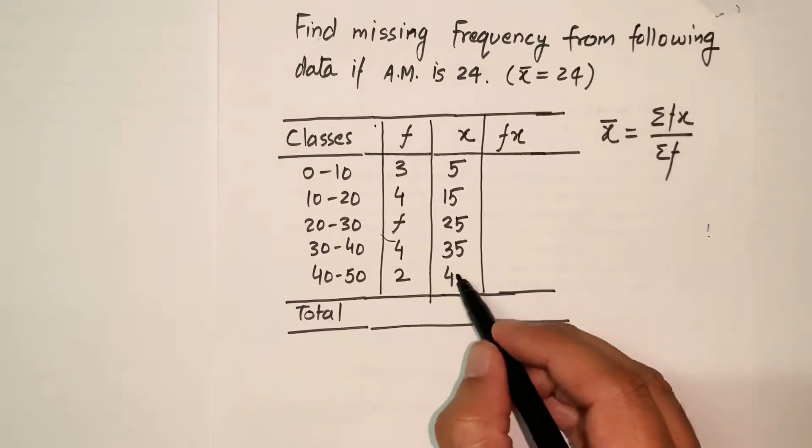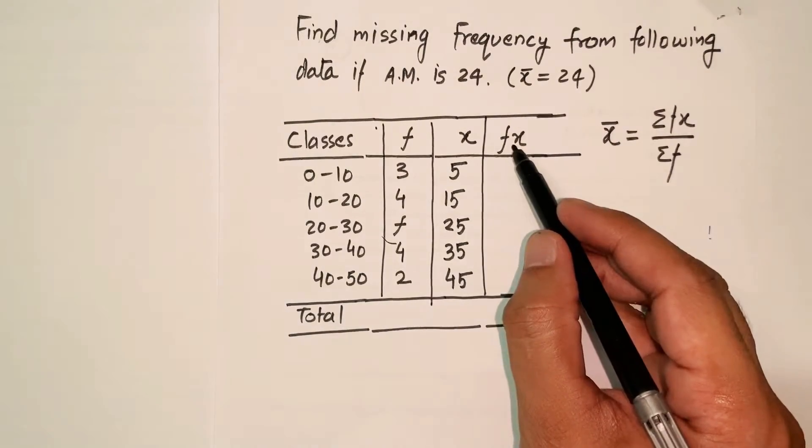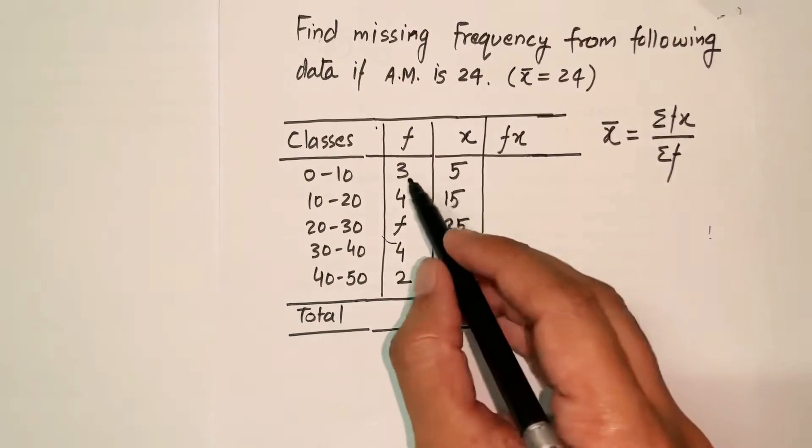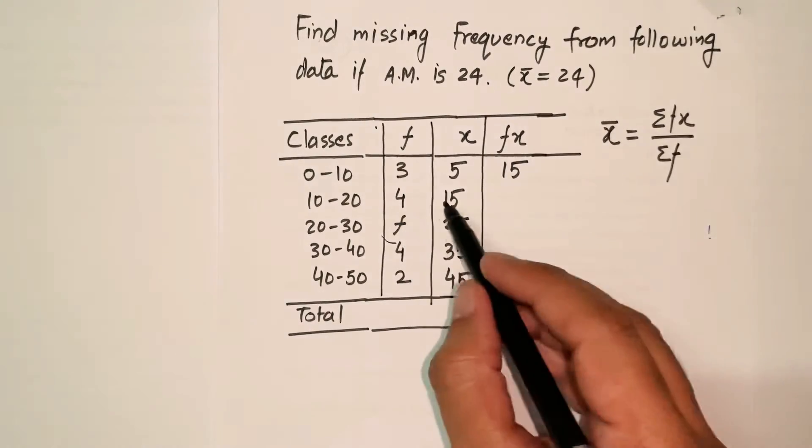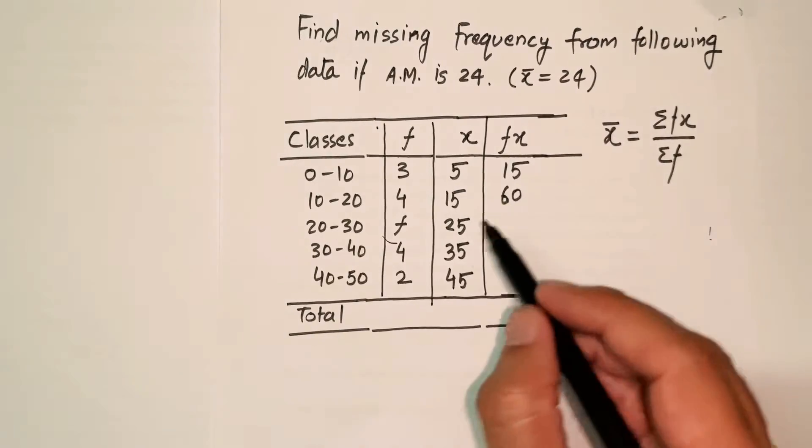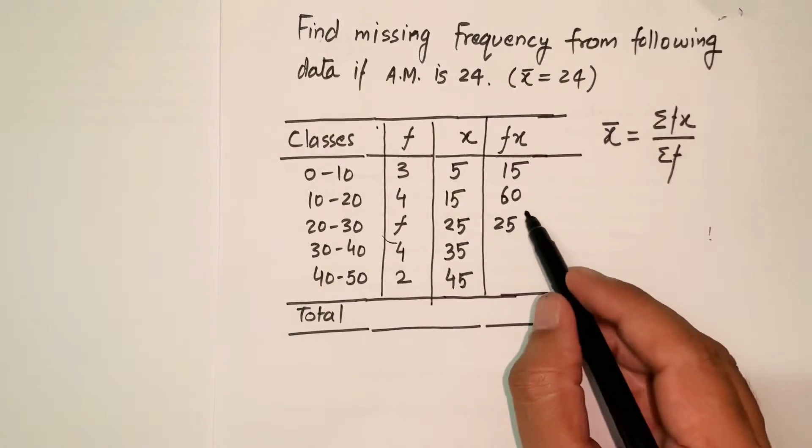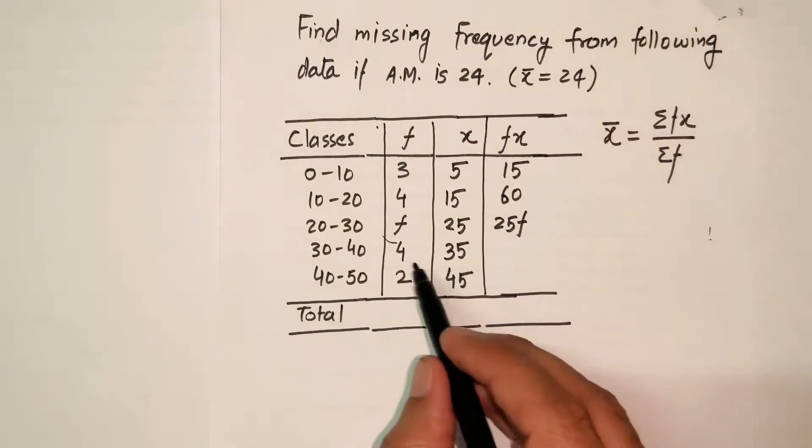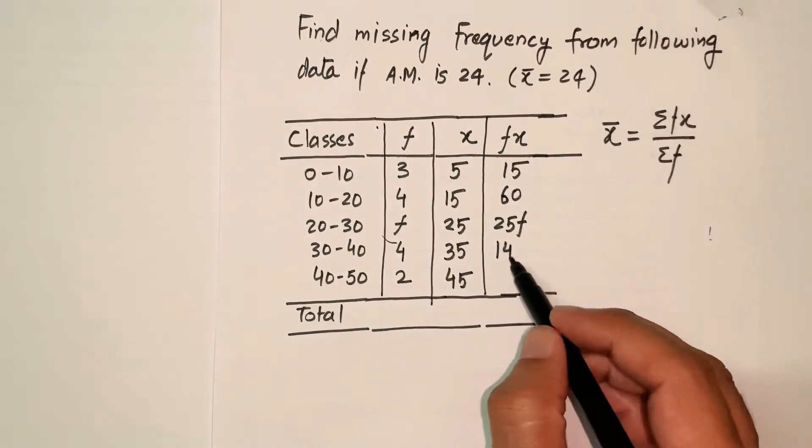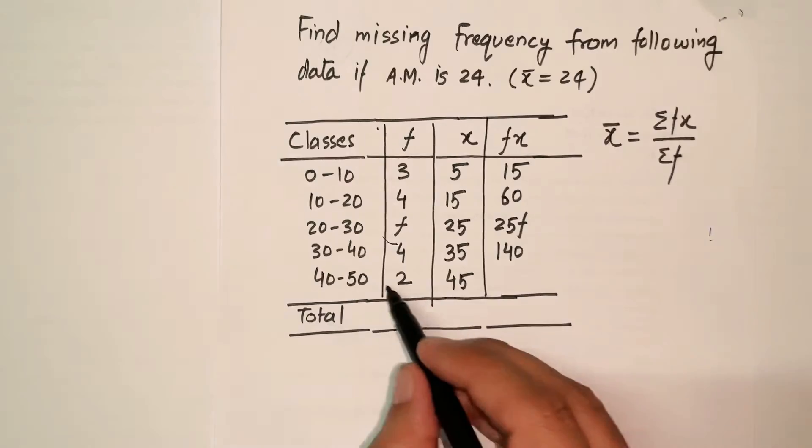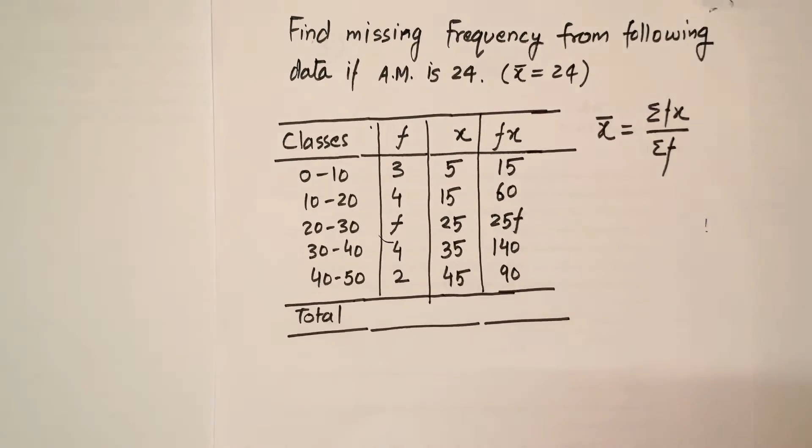And the same way it is 45. I've calculated midpoints, now I'll calculate fx. The first value is 3 times 5, that is 15. Second is 4 times 15, that is 60. My next value is 25 times f, that becomes 25f. The next is 35 times 4, which is 140, and then 45 times 2, which becomes 90.